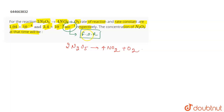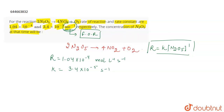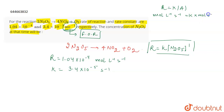This is a first order reaction — we can understand it by the units of K. The rate is given as 1.04 × 10⁻⁴ mol per liter per second, and the rate constant is 3.4 × 10⁻⁵ second inverse. Writing the rate law: rate = K × [N2O5]¹. Since rate equals K times concentration, and concentration is mol per liter, the mol per liter cancels, leaving second inverse as the unit of K — confirming this is a first order reaction.